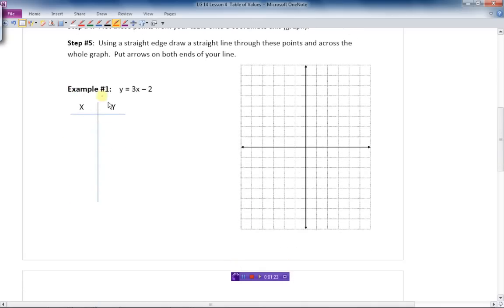We have our table already drawn for us here. Let's just put some X's and Y's in there. First of all, we have the X's: 2, 1, 0. Let's just put five numbers down.